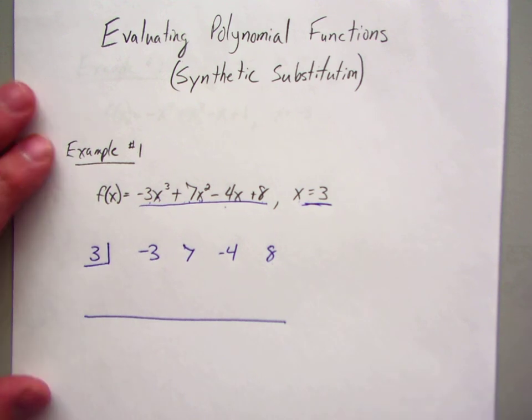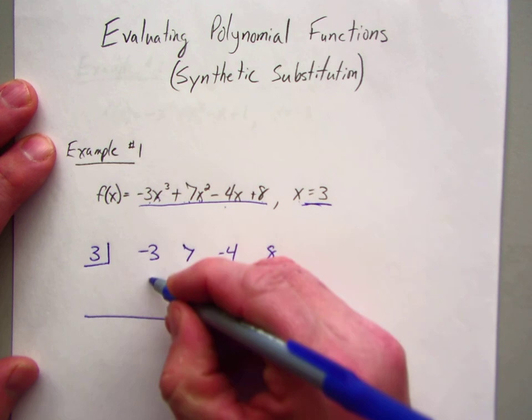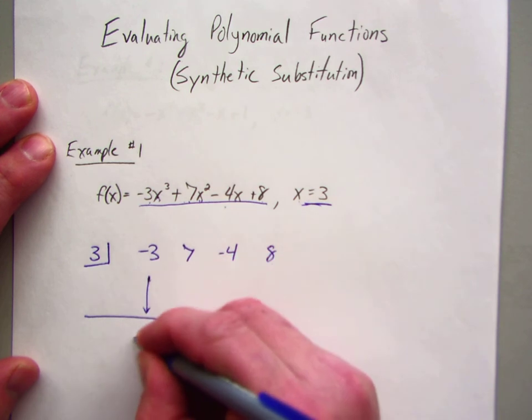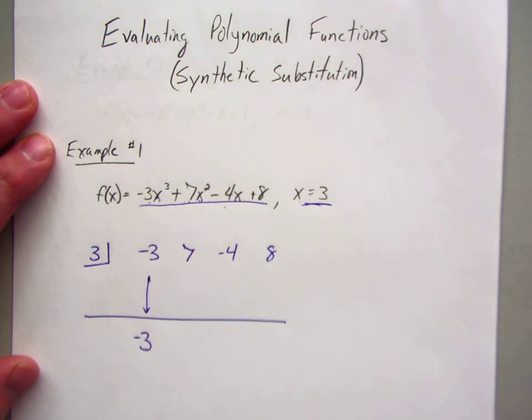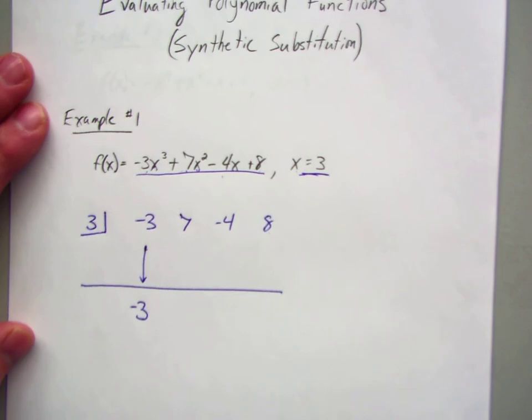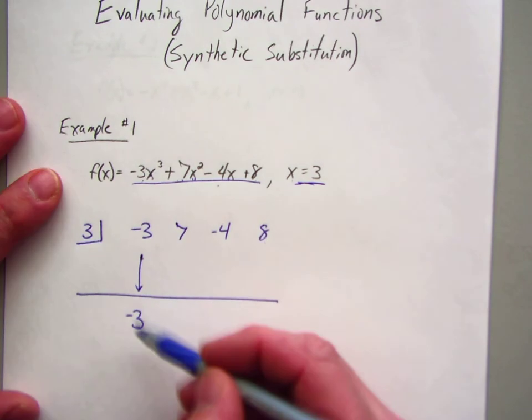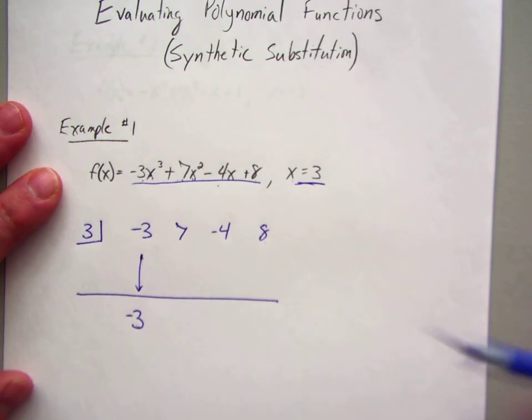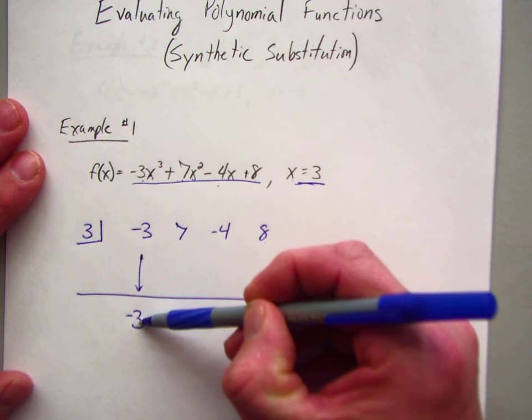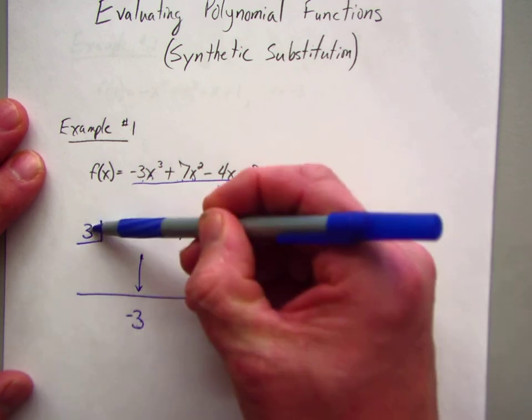The very first step will always be the same: bring down the negative 3. I bring down the negative 3. Now, this number down here, I multiply by what is in the box.